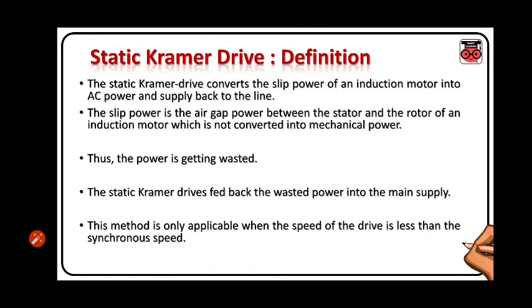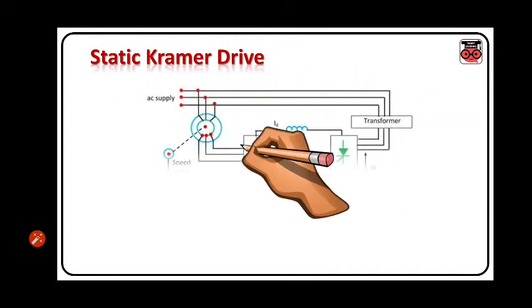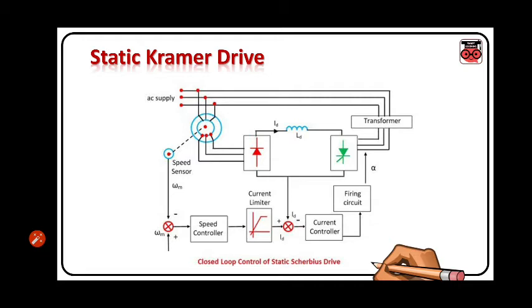This method is only applicable when the speed of the drive is less than the synchronous speed of the drive. This is the full diagram closed loop control of this drive.